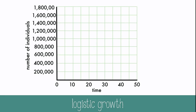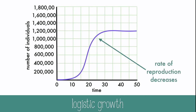On the other hand, logistic or sigmoidal growth includes the variable K for carrying capacity. With this new variable, growth initially increases rapidly but slows down as carrying capacity is reached, and eventually declines as it is exceeded. This results in an S-shaped growth pattern.